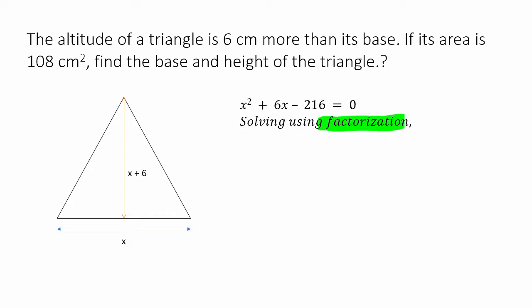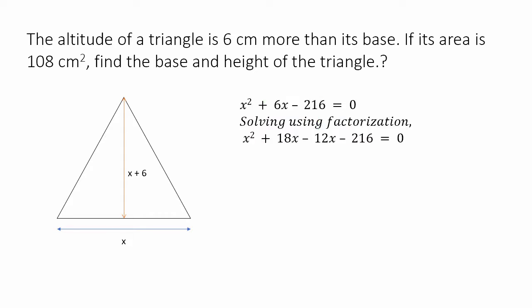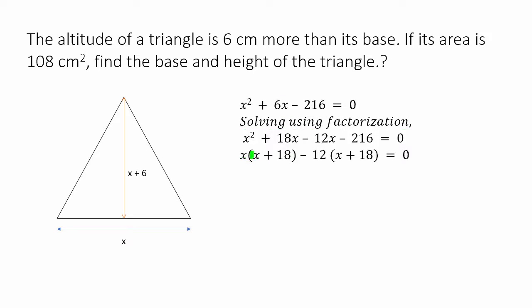To solve using factorization, we need to split 6x such that when we multiply the coefficients, it becomes minus 216. It turns out 18 and 12 are the numbers — so 18x minus 12x. 18 times minus 12 is minus 216, and 18x minus 12x is 6x. Taking x plus 18 as a common factor, we get x plus 18 multiplied by x minus 12.